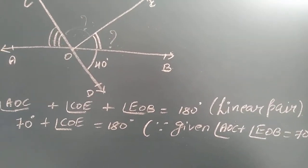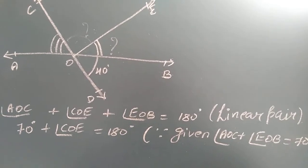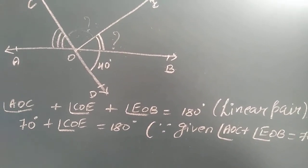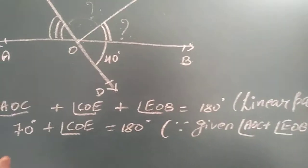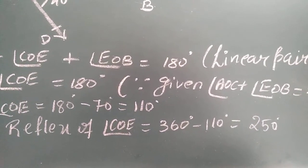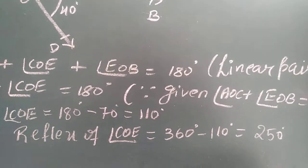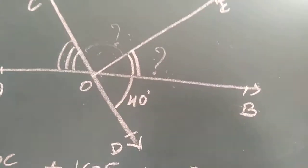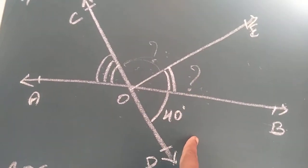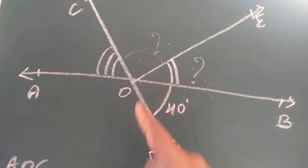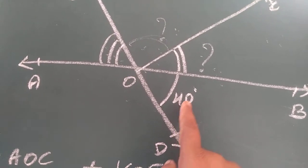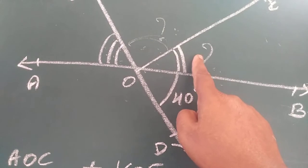As I explained, I have written what is given. The sum of all three angles is 180 degrees because it is a linear pair. I replaced angle AOC plus angle EOB by 70 degrees as given. Taking 70 degrees to the other side gives subtraction, and the reflex of angle COE is 250 degrees. For the second part, angles COE, EOB, and BOD sum to 180 degrees. With COE as 110 degrees and BOD as 40 degrees, their sum is 150 degrees, so angle BOE equals 180 minus 150, which is 30 degrees.